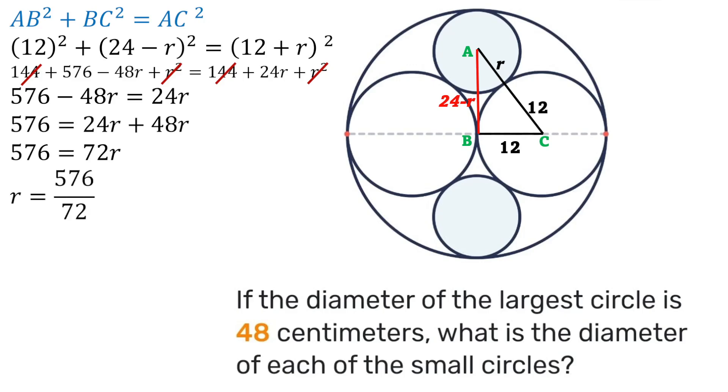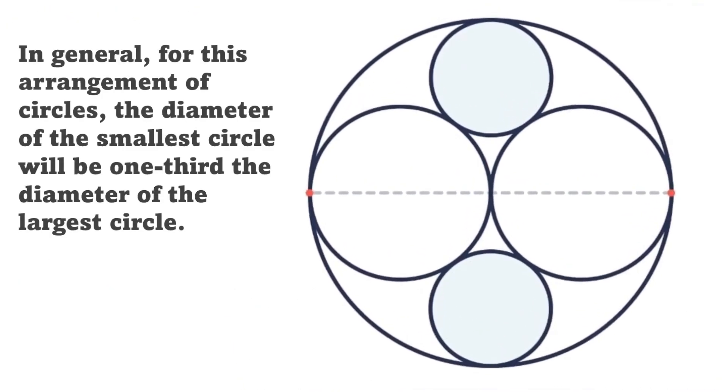So if the radius is 8, then the diameter that we're looking for will be double that amount which gives us that the answer is 16 centimeters. Did you get it right?